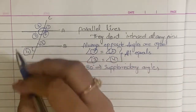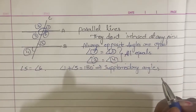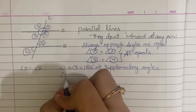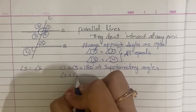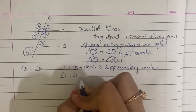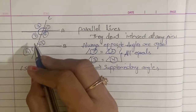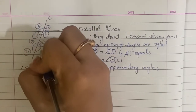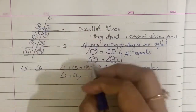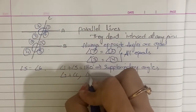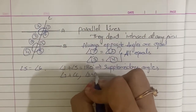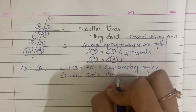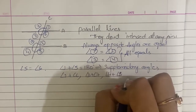Supplementary angle pairs: Angle 1 and Angle 5, Angle 2 and Angle 6 are supplementary. Angle 3 plus Angle 7 is supplementary. Angle 4 plus Angle 8 is supplementary.